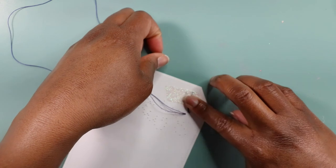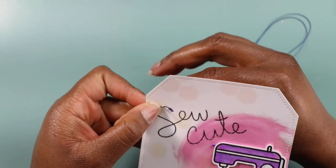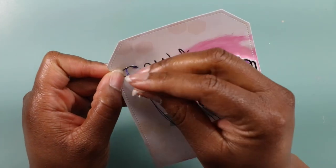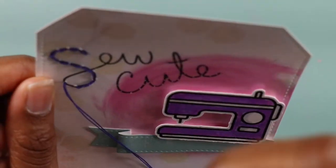One tip I do is to use a little bit of washi tape on the back just to make sure that your thread stays in place and then I just go through and stitch all around my saying.